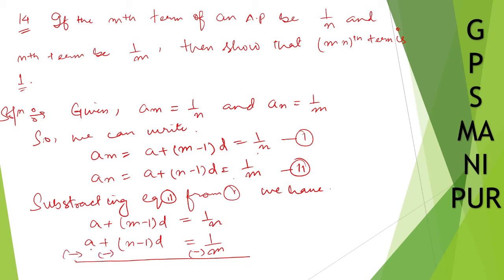So a minus a is 0, and we get (m minus 1)d minus (n minus 1)d, which equals 1/n minus 1/m.